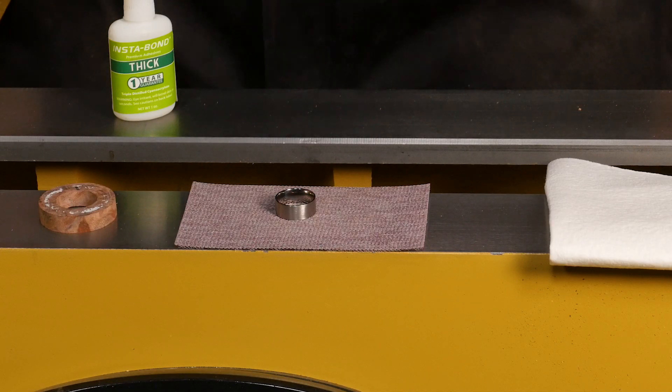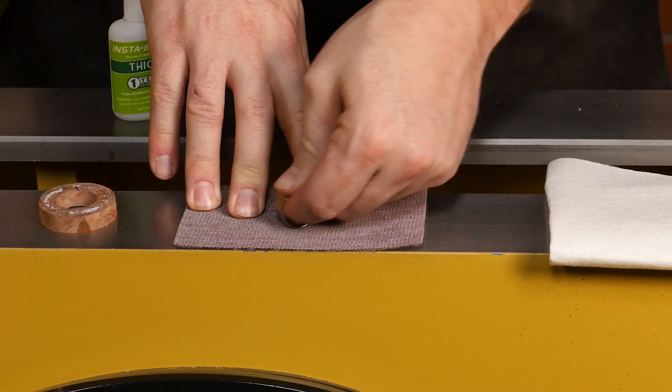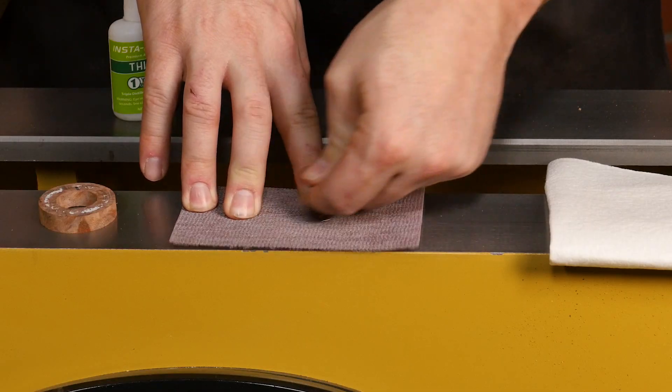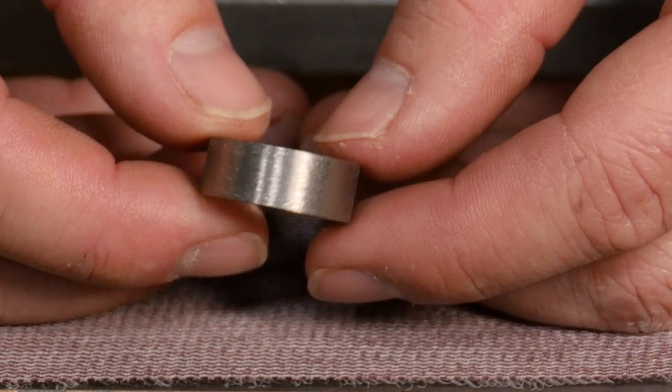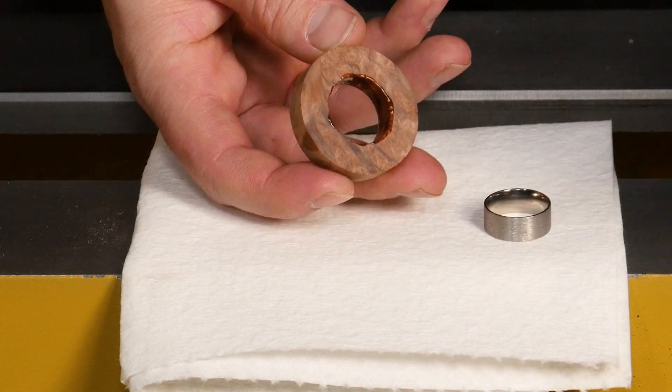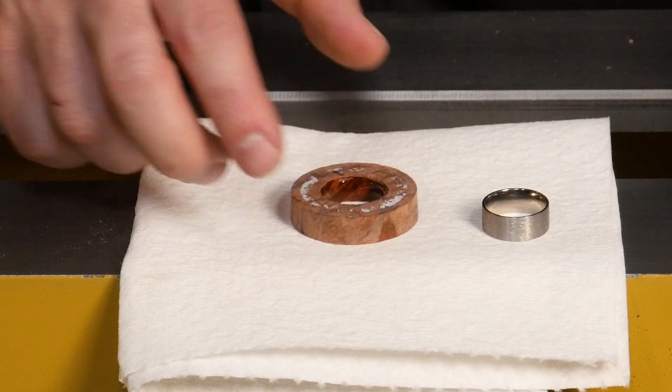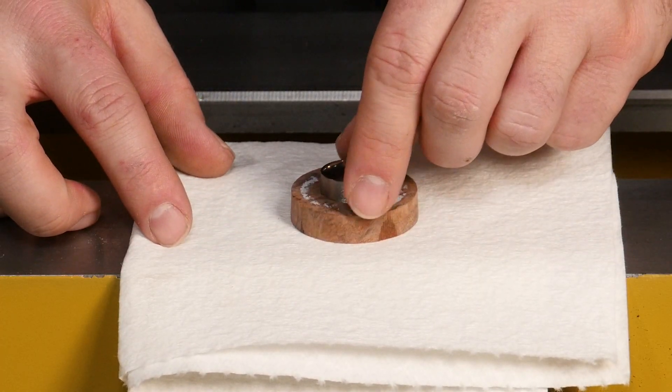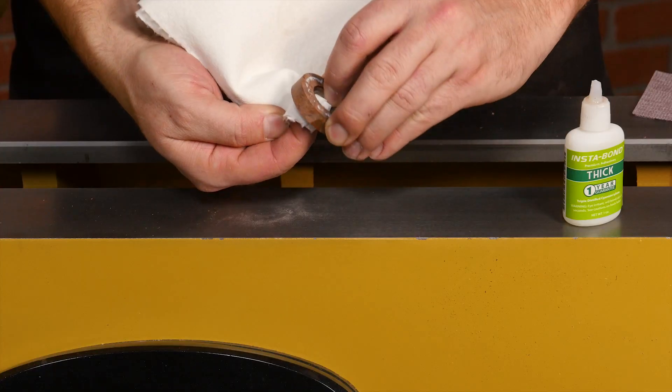Now we're ready to glue the core into the blank. Start by scuffing the core on some 220 grit sandpaper for a better bond. Lightly apply CA glue or epoxy to the inside of the blank. Lay the blank flat and insert the core until it is flush. Wipe away excess glue and let it cure.